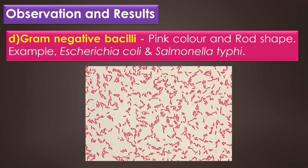Gram negative bacilli appear in pink color and rod shape. Examples for gram negative bacilli include Escherichia coli, Salmonella typhi, Shigella species, Klebsiella pneumoniae, Proteus species, Serratia species, Pseudomonas species, Vibrio species, etc. This image shows the gram negative bacilli.